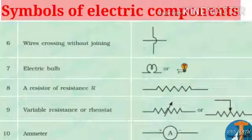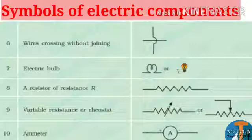Number 6: wires crossing without joining. Number 7: electric bulb. Number 8: a resistor of resistance R. We will discuss the resistor in future classes. Number 9: variable resistance or rheostat. Number 10: ammeter.